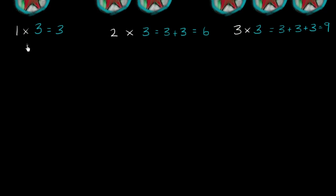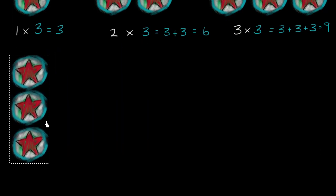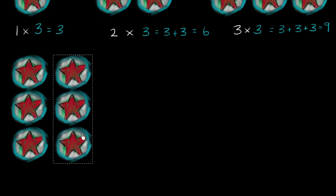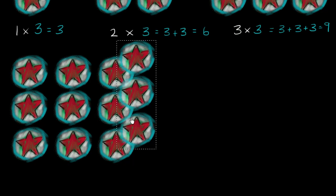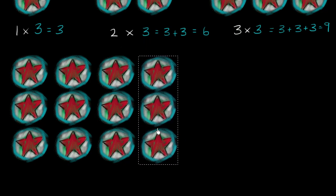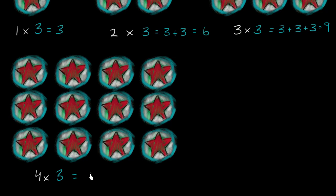Let's keep incrementing. Let's get four groups of three — so one, two, three, and four. This is four groups of three. We could write this as four times three, which is the same thing as three plus three plus three plus three — four threes. So we get three, six, nine, twelve. Twelve.